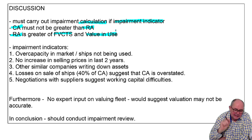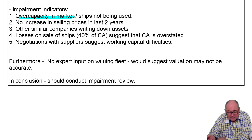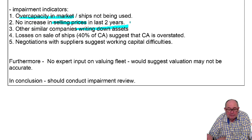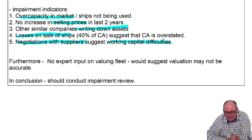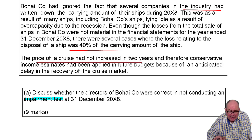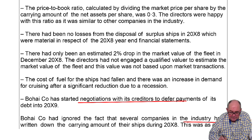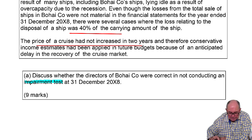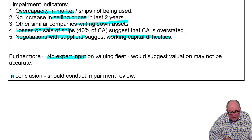Looking at the scenario: overcapacity in the market — people are simply not going on cruises, or not enough people. Selling prices are not going up. Other companies are writing down their assets. There have been losses on sale of ships. If you negotiate with suppliers, it means you can't afford to pay them. Also, the directors haven't got any expert in — they think it's only fallen by 2%, but that's not from a valuer, so it might be completely unreliable. So they need to do a proper impairment review.